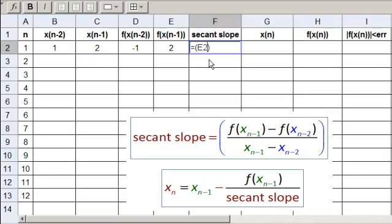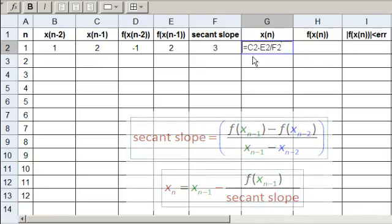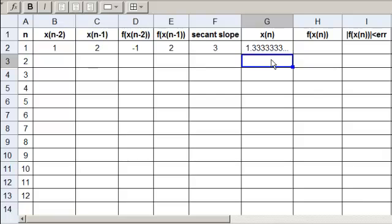Equals parenthesis E2 minus D2, go outside there, divide it by the change in the x values, so parenthesis C2 minus B2, enter. Now we look at the formula below. We have equals, we need the last x, so that's C2, and then a minus sign, then the f of that x, so E2, and then we divide it by the secant slope which is F2. This is the part of the secant method that we have to have. This depends on the error.